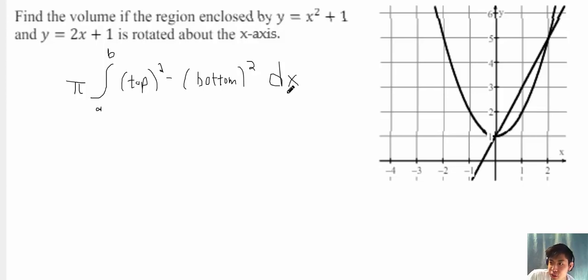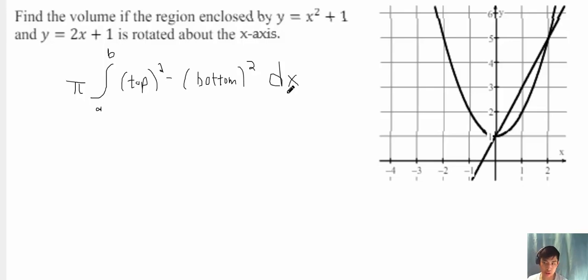Now it looks a bit strange to just throw a formula at you, so we're going to take a look at how this formula exactly works and how it's easier to visualize when you're actually solving a problem. When I say top function, I mean the function on top of the enclosed area. In this scenario, it would be the straight line, 2x plus 1.